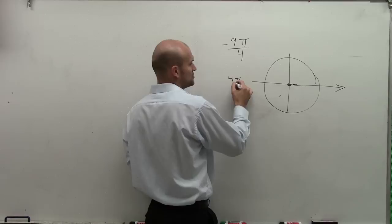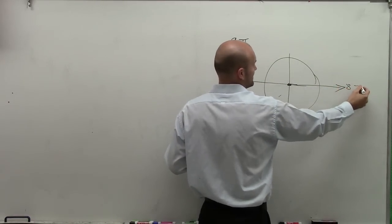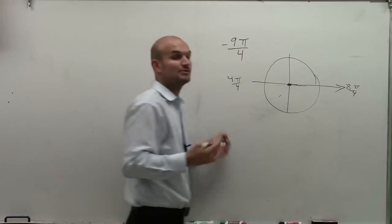Halfway around would be pi, which is 4 pi over 4. All the way around would be 8 pi over 4, which we write as 2 pi.